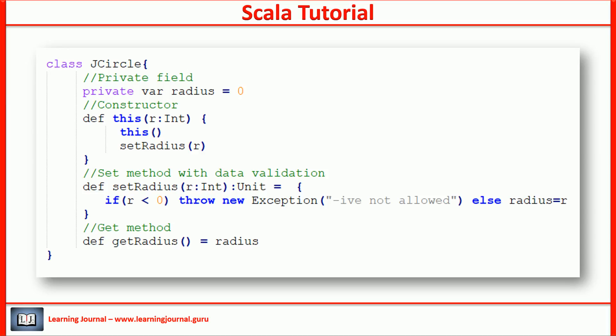We defined a class for a circle. We want to make sure that no one should be able to set the radius of a circle to a negative number. We make the radius private and implement a setRadius method. Now, you can add the logic to validate the radius. Right?